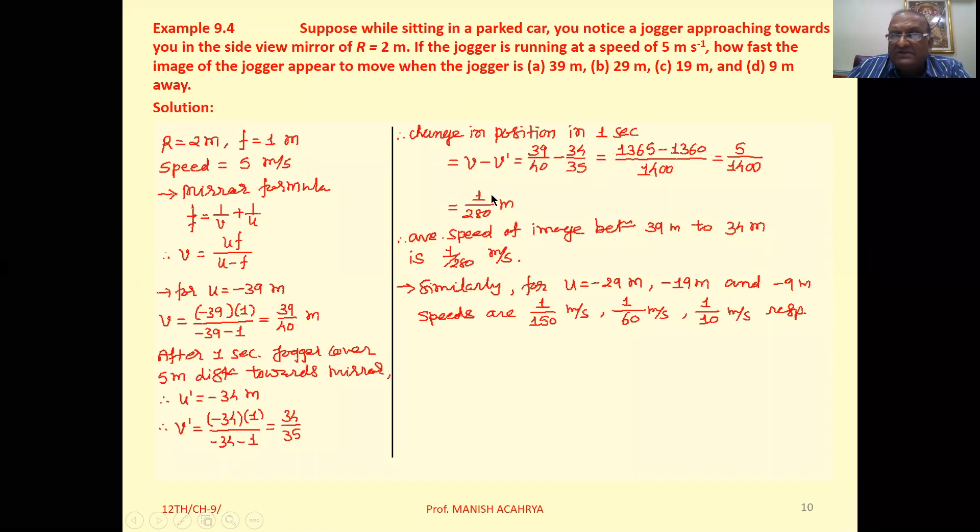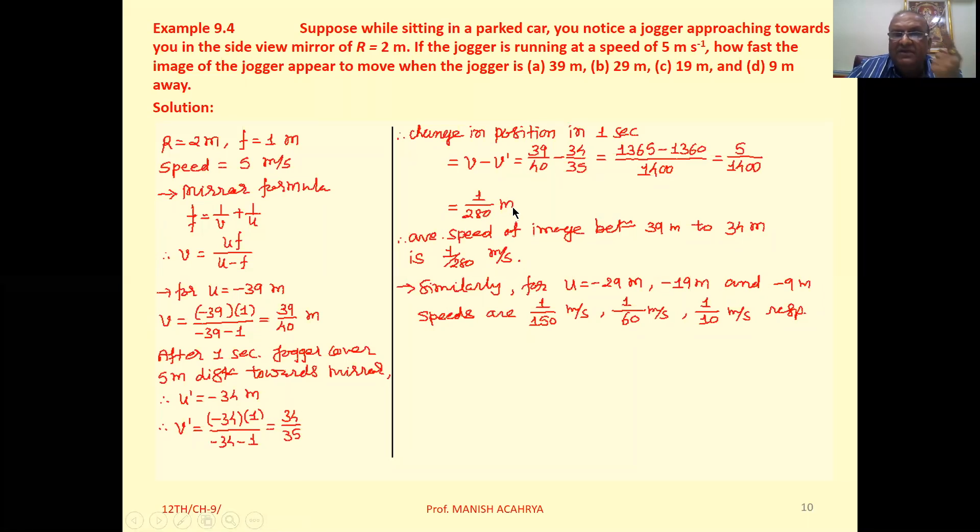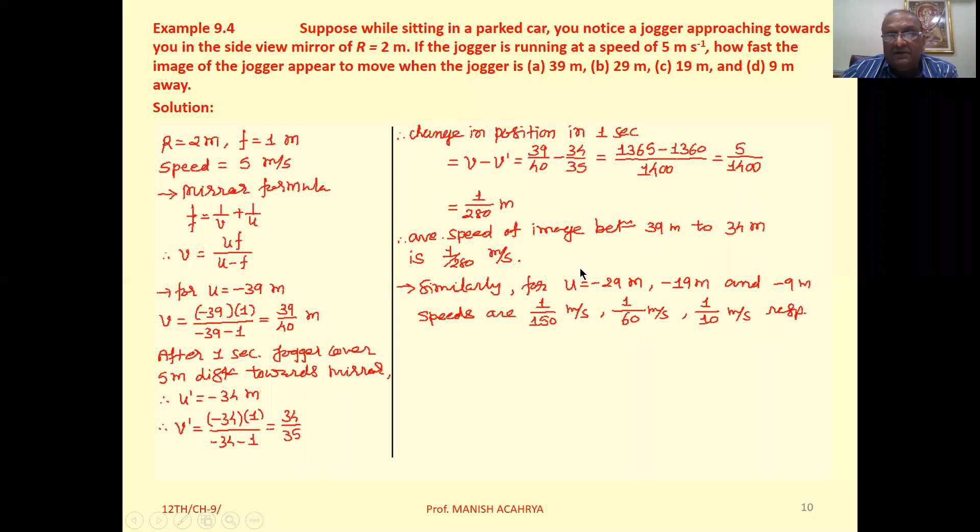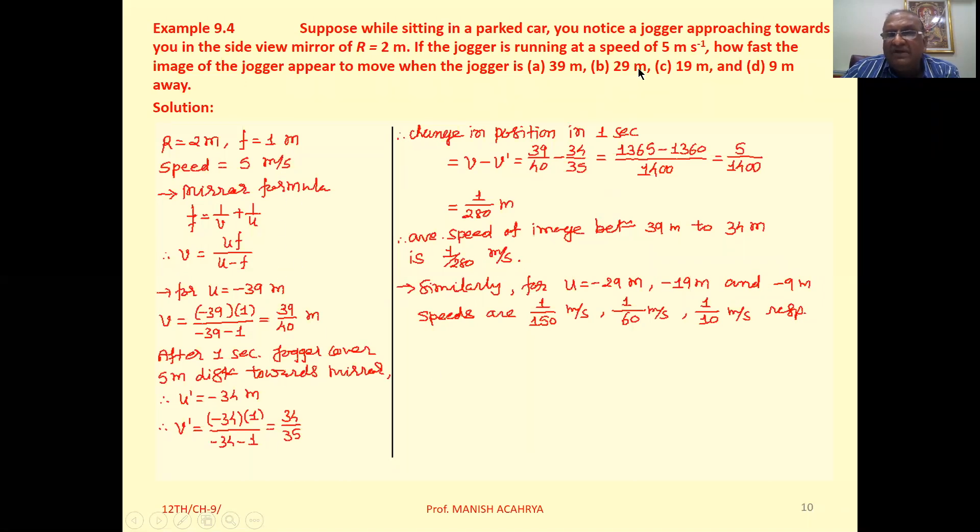It implies that the image covers the distance equal to 1 upon 280 meter in 1 second. So we can say the average speed of the image between 39 meter to 34 meter is 1 upon 280 meter per second.